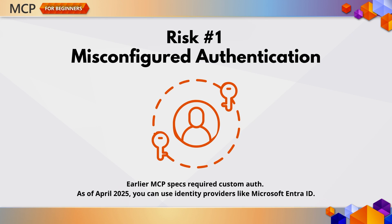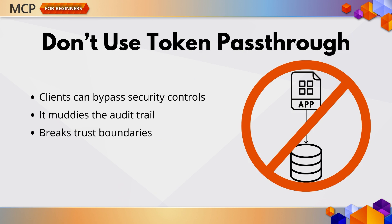Earlier MCP specs assumed you'd roll your own OAuth 2.0 authentication server — that's not ideal for most devs. As of April 2025, MCP servers can now delegate auth to external identity providers, like Microsoft Entra ID, which is a huge improvement. But even with this update, token mismanagement is a real concern. Some folks might be tempted to let the client pass its token straight to the downstream resource — called token pass-through. This is explicitly forbidden in the MCP spec because clients can bypass critical security controls, it muddies the audit trail, and it can break trust boundaries between services. The bottom line: only accept tokens issued specifically for the MCP server. If you're using Azure, tools like API Management, Microsoft Entra ID, and the official MCP security guides will walk you through best practices.